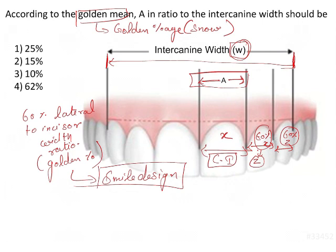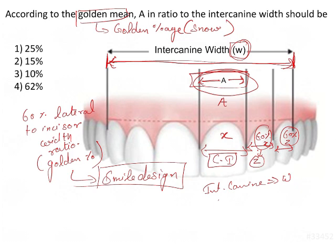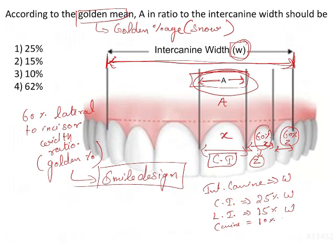The golden proportion is used in smile design to give proper width to the various anterior teeth in the aesthetic zone. When finding the ratio of 'a' to the intercanine width W, the central incisor should be twenty to twenty-five percent of the total intercanine width. According to the golden proportion, each maxillary lateral incisor should be fifteen percent of the width, and each canine should be ten percent of the intercanine width when viewed from the anterior.